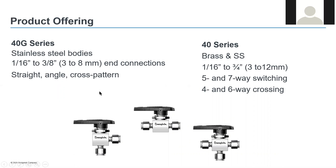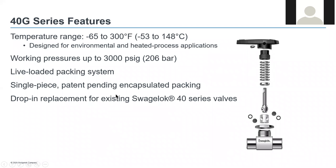The Swagelok 40G series is a one-piece instrumentation ball valve and an evolutionary change to the 40 series line. It combines the proven features of the 40 series and the standard live-loaded T-valve with an innovative seal design that performs in both environmental and heated process applications. The 40G series valve line encompasses stainless steel bodies from one-sixteenth of an inch up to three-eighths of an inch, along with straight, angle, and cross pattern configurations. Working pressure is up to 3,000 PSIG.